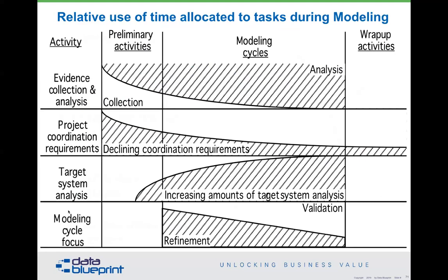We should be doing increasing amounts of target system analysis as we go through, as opposed to decreasing amounts. Finally, the modeling cycle: we need to spend time refining the existing model, but we also have to do what we call validation. Any model that has not been validated is in draft status. I see this happen over and over again in organizations — they will never do the validation piece and never know they're putting out a data model that simply is not workable.